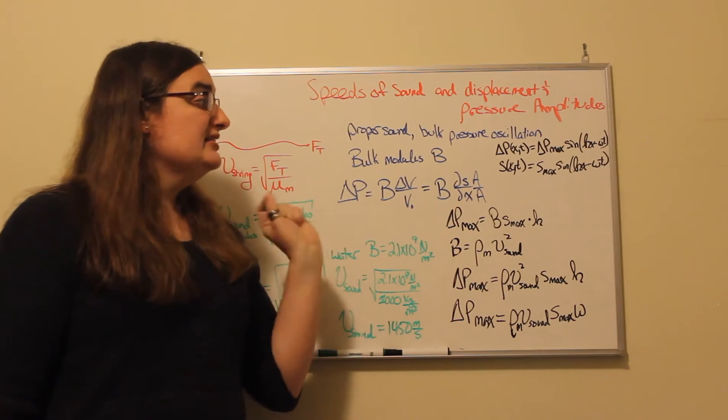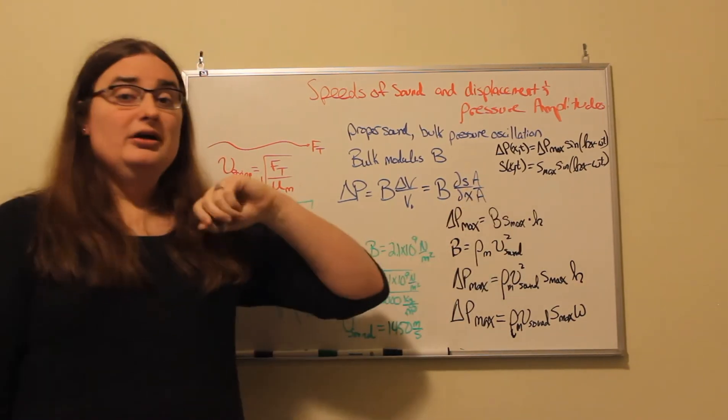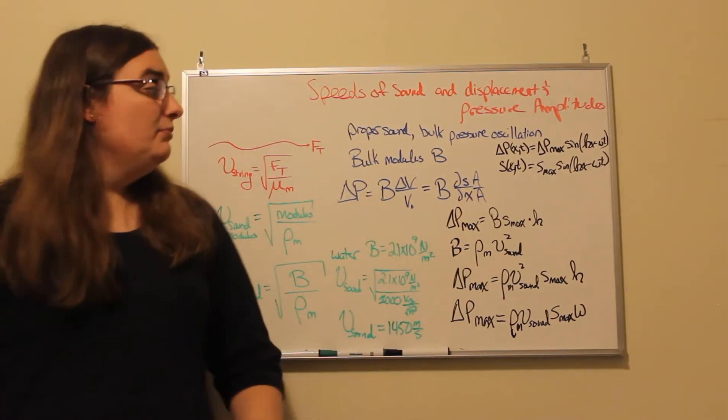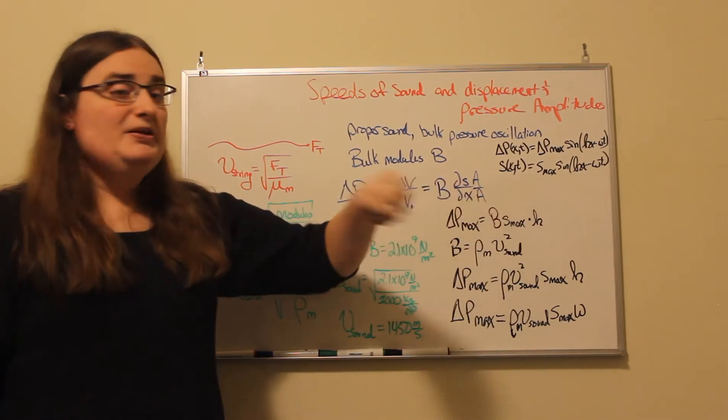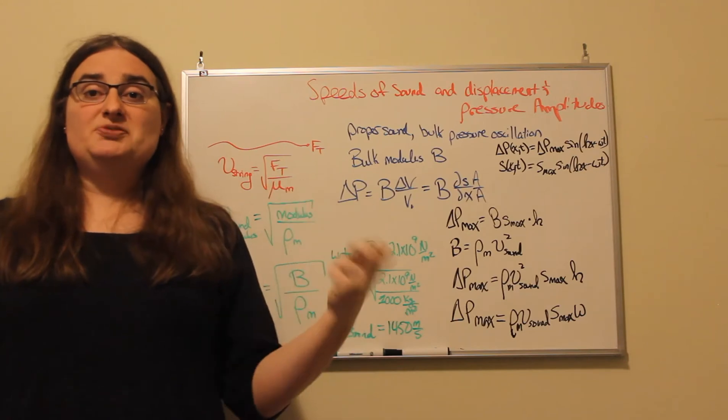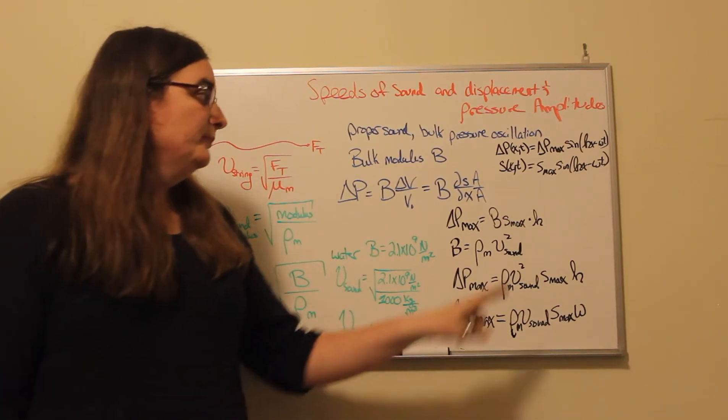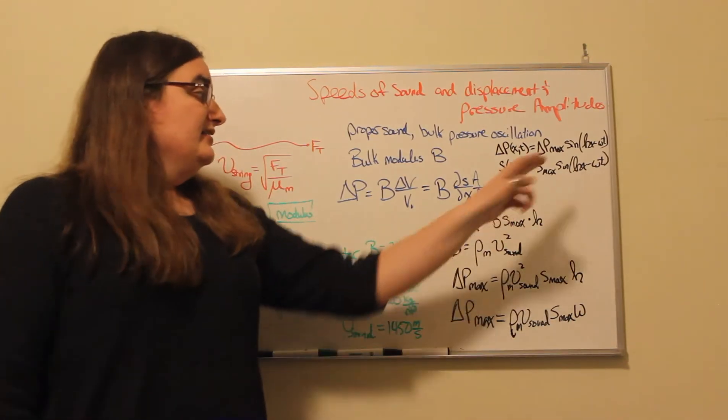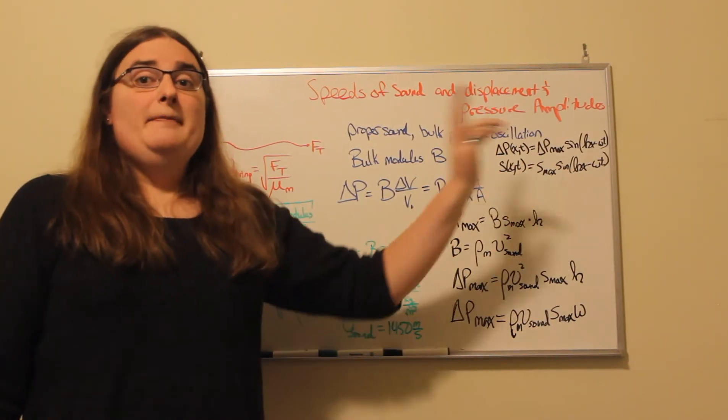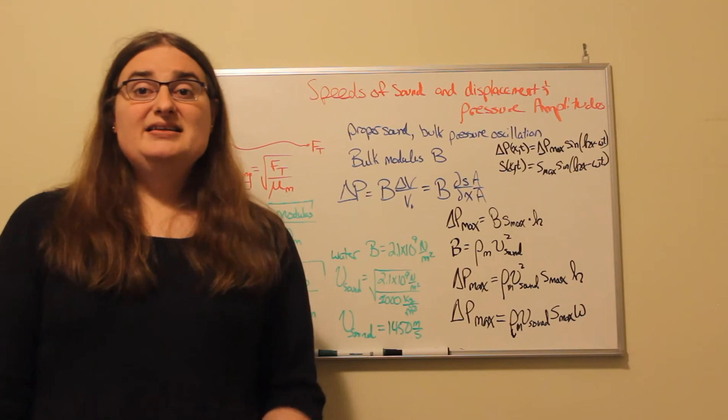So there would be a displacement amplitude that we could describe where our displacement function as a function of space and time would be the maximum possible displacement of that gas molecule times the sine of the angular wave number k times our location x minus our angular frequency omega times time.